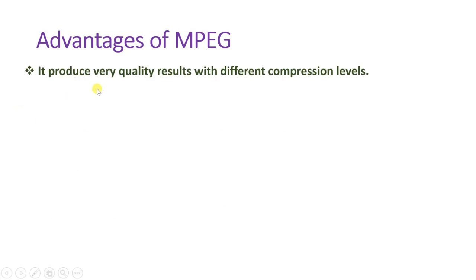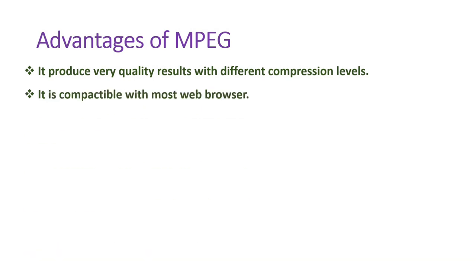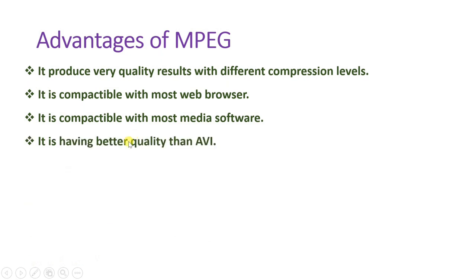Now the advantages of MPEG: it produces very good quality results at different compression levels — compression standards are not fixed, you can scale based on requirement. For higher resolution, use a lower compression factor; for less storage space, increase compression. MPEG is compatible with most web browsers and most media software, and it has better quality than AVI. MPEG gives far better resolution and quality compared to AVI, making it in high demand.